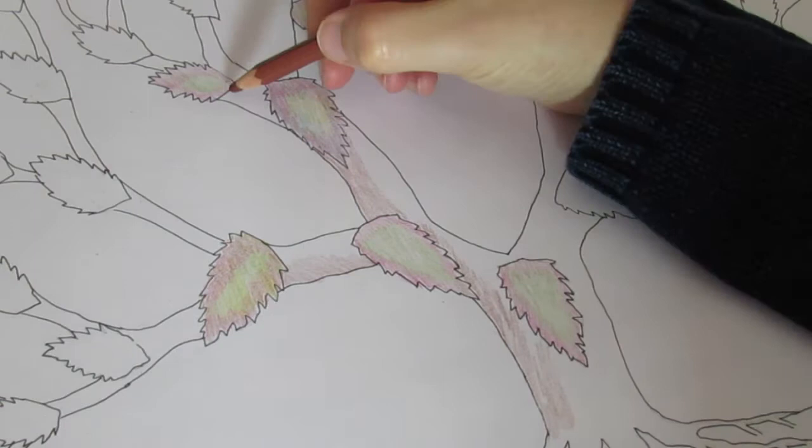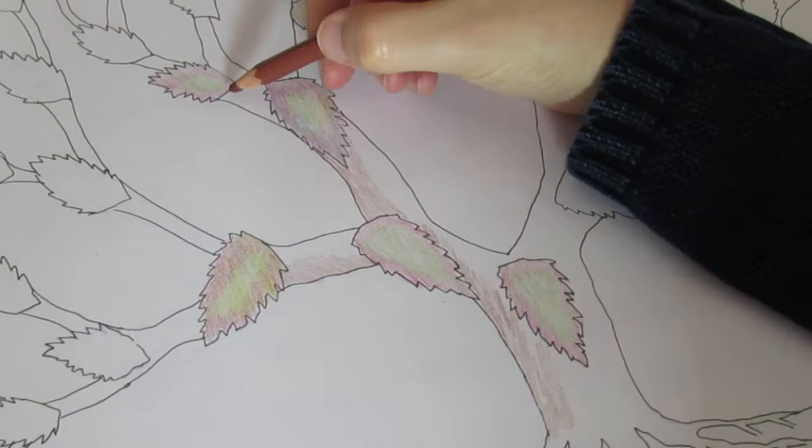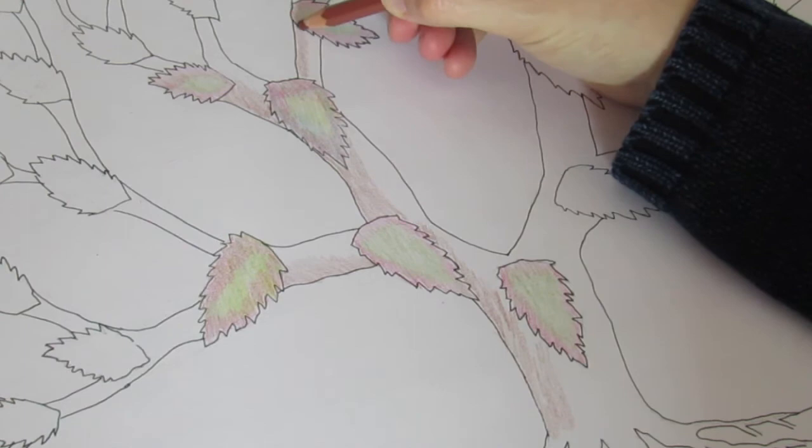So this is the shade side of the tree. So I'm making sure that all the left hand sides of the branches are a bit darker, and then we'll start to work on the rest of it as I go.